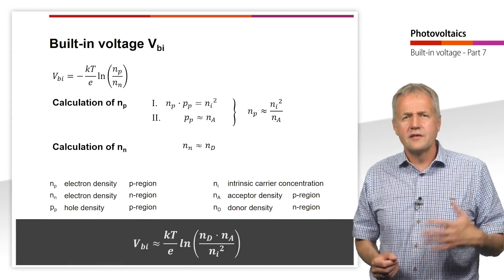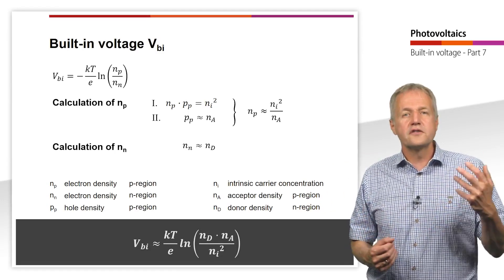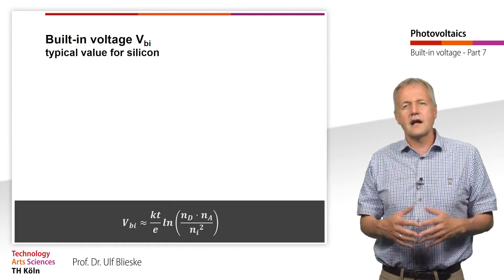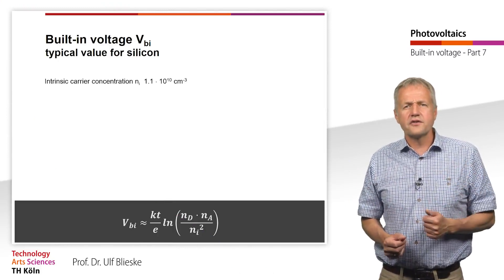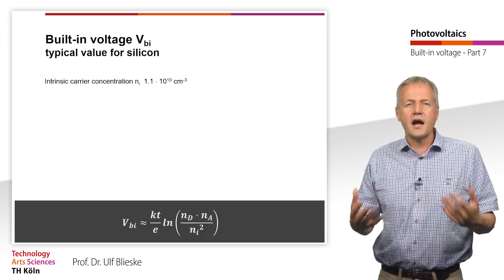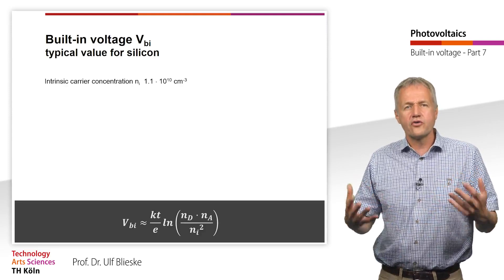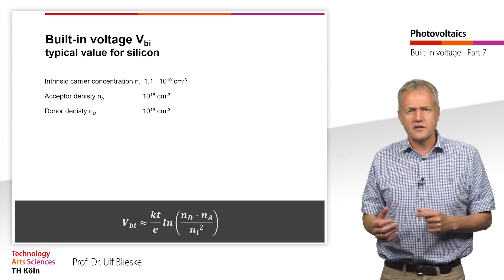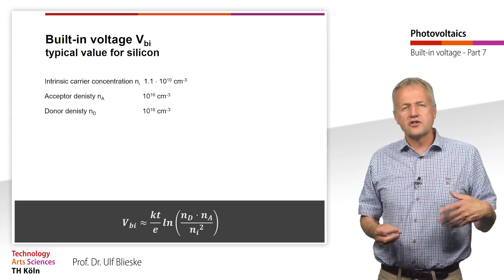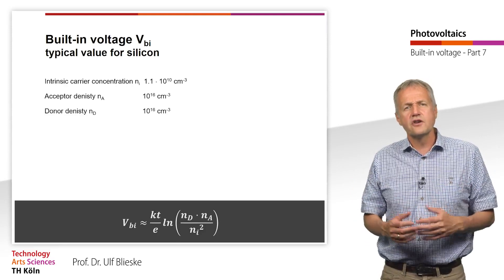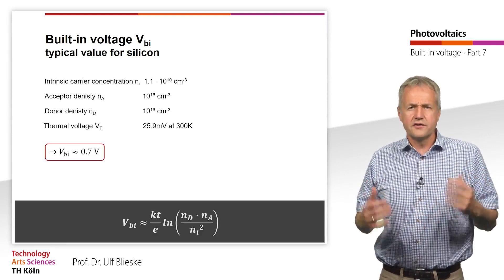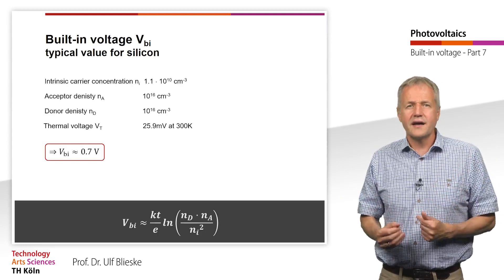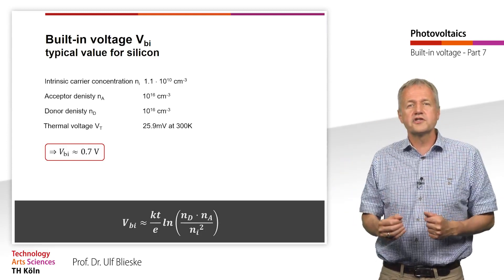The result shows us that the built-in voltage depends significantly on the dopant concentrations. Let us now assume typical values of a silicon solar cell and calculate the built-in voltage. The intrinsic carrier concentration for silicon at room temperature is 1.1 × 10¹⁰ per cubic centimeter. Typical dopant concentrations are in the range of 10¹⁶ per cubic centimeter. Using the thermal voltage of 25.9 millivolts at room temperature, we get a value of 0.7 volts for the built-in voltage of a typical silicon solar cell. The built-in voltage also gives us an indication of the maximum open-circuit voltage that can be achieved.